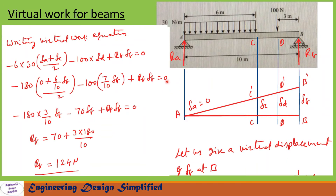Now let us write the virtual work equation: −6 × 30 × (delta_A + delta_C) / 2, where 6 is the span, 30 N/m is the UDL, so total load is 30 × 6, and the average displacement between A and C is (delta_A + delta_C) / 2. The full equation is: −6 × 30 × (delta_A + delta_C)/2 − 100 × delta_D + RB × delta_B = 0.